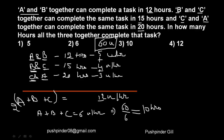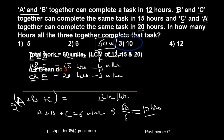Quick recap: A+B finish the job in 12 hours, B+C in 15 hours, C+A in 20 hours. Work assumed to be 60 units. They finish 5, 4, and 3 units per hour respectively. Adding gives 12 units per hour — which is twice the combined capacity of A, B, and C. So A+B+C finish 6 units per hour. With 60 units, they complete the job in 10 hours.